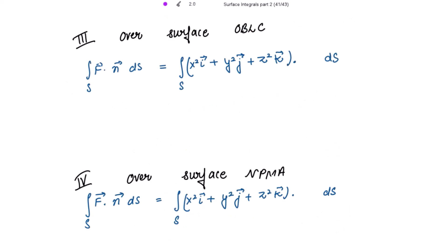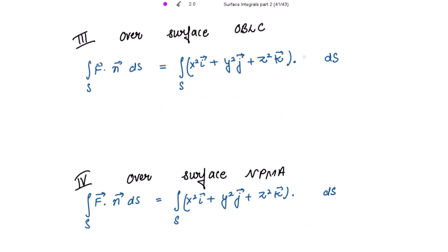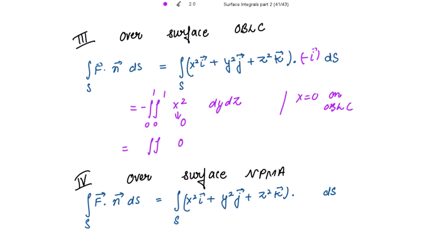Over surface OBLC, the outward unit normal is along the negative x-axis, so n̂ = −î, and ds = dy dz. On this surface x = 0, so the dot product gives −x² = 0. The surface integral equals 0. Marking this as 3.